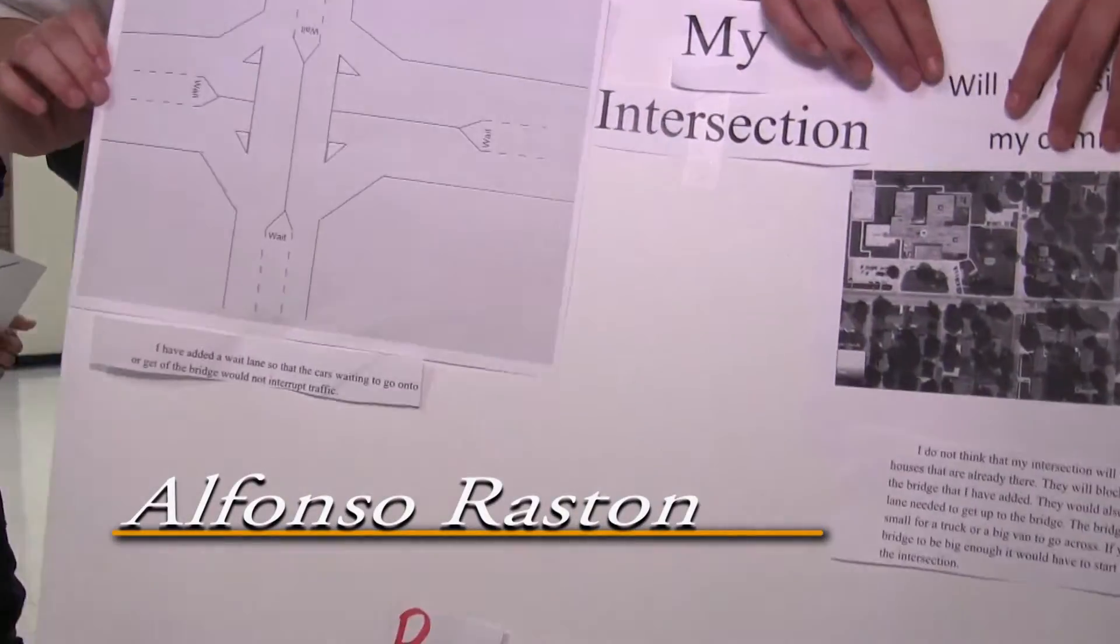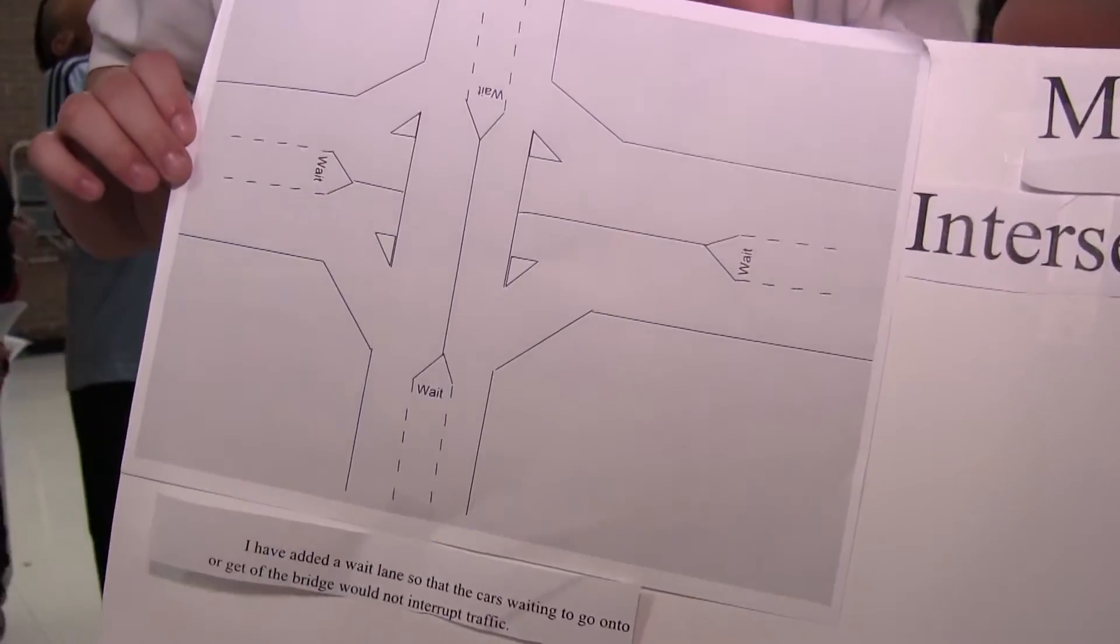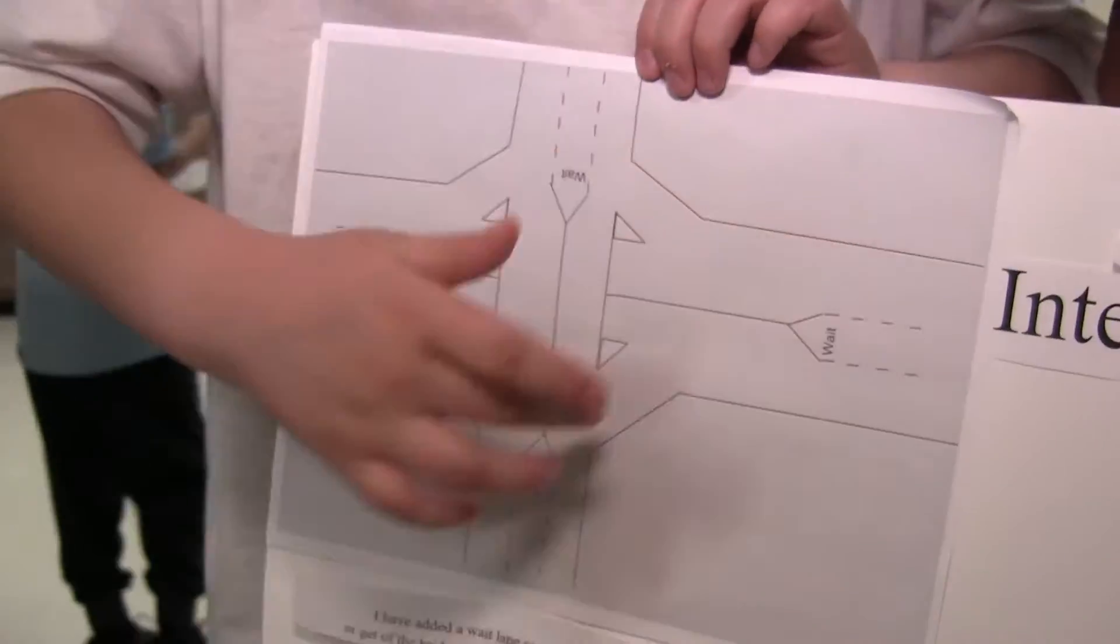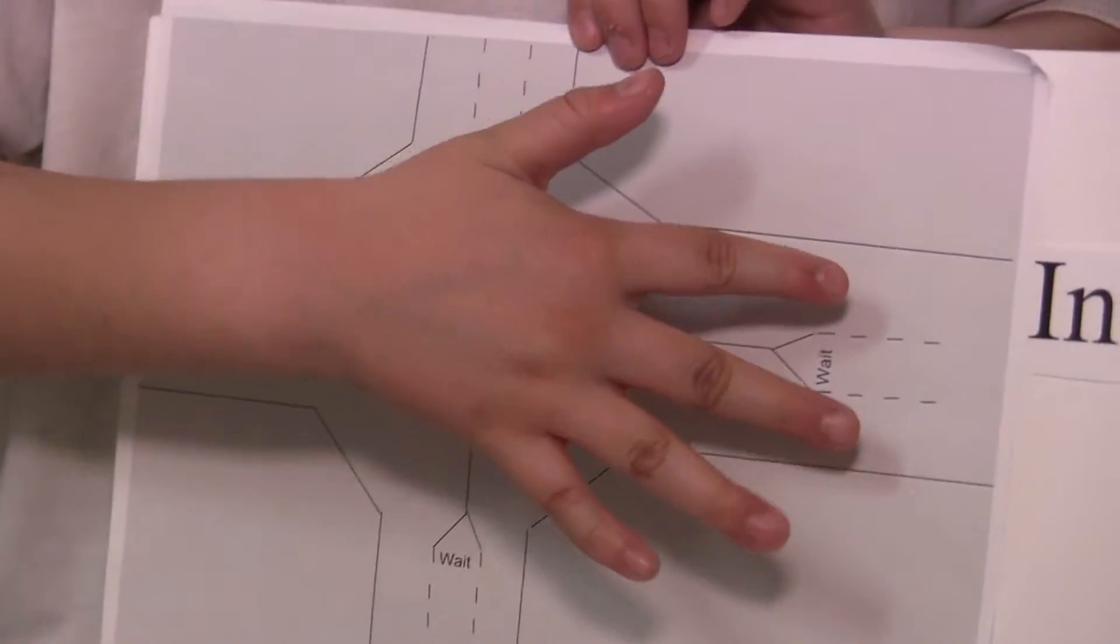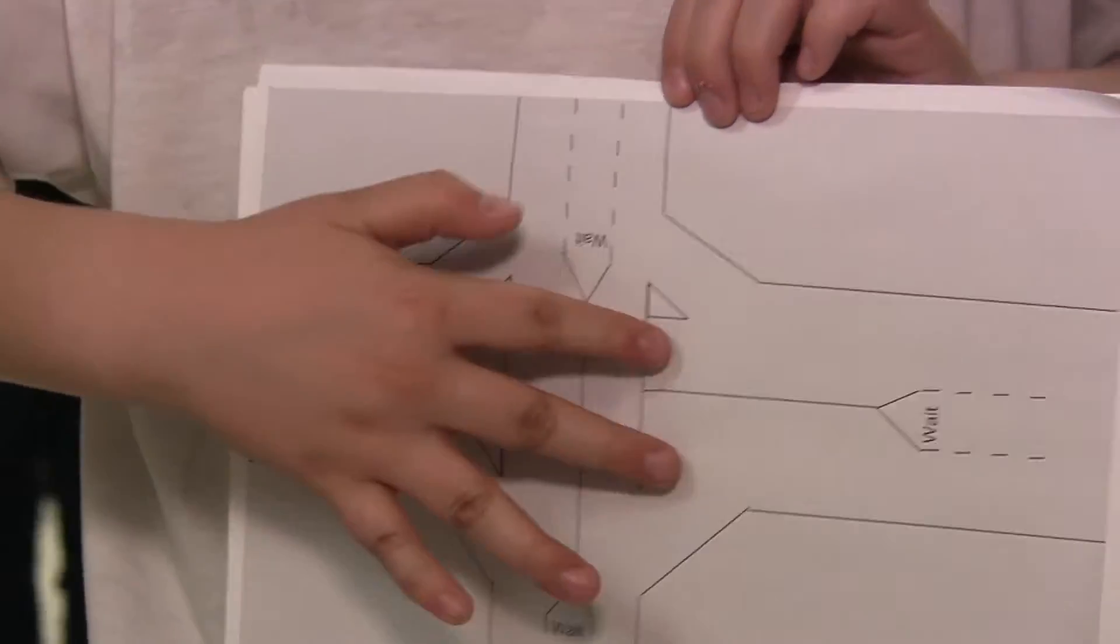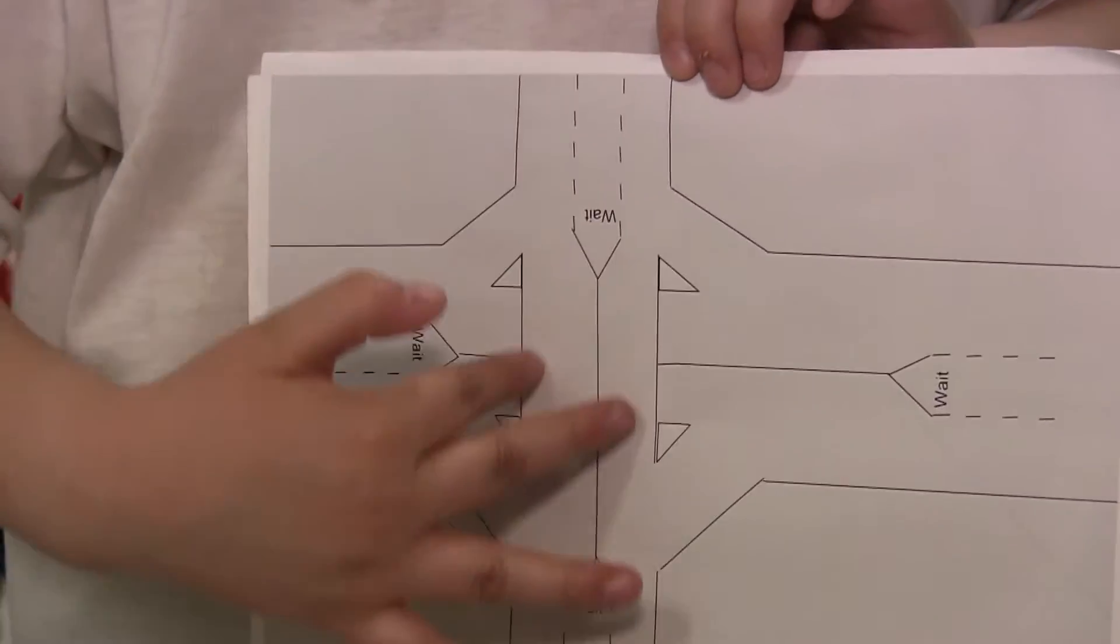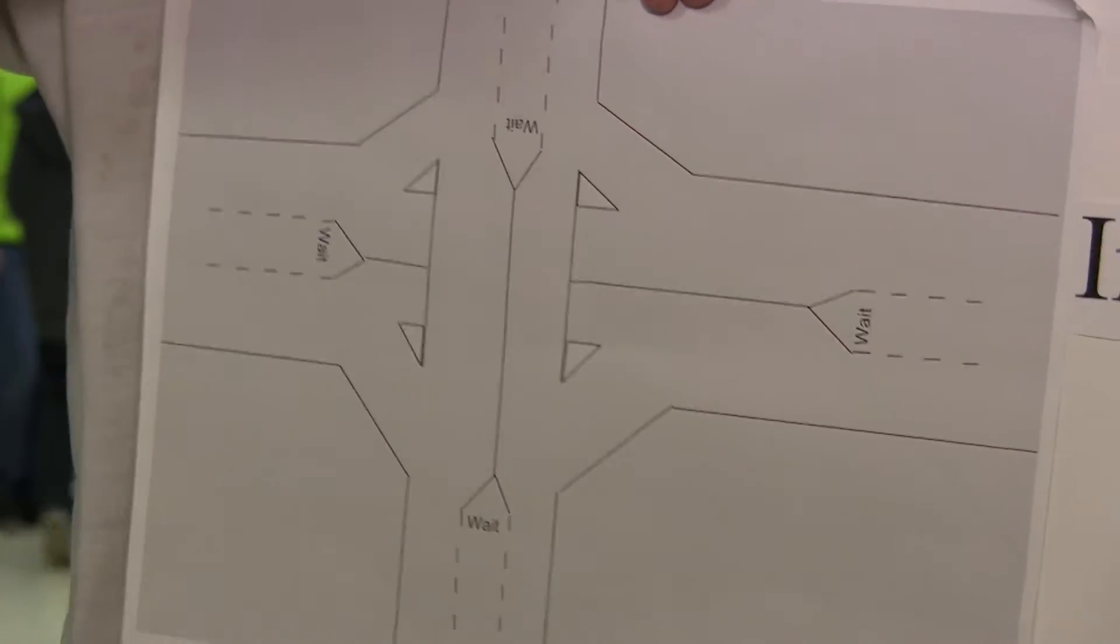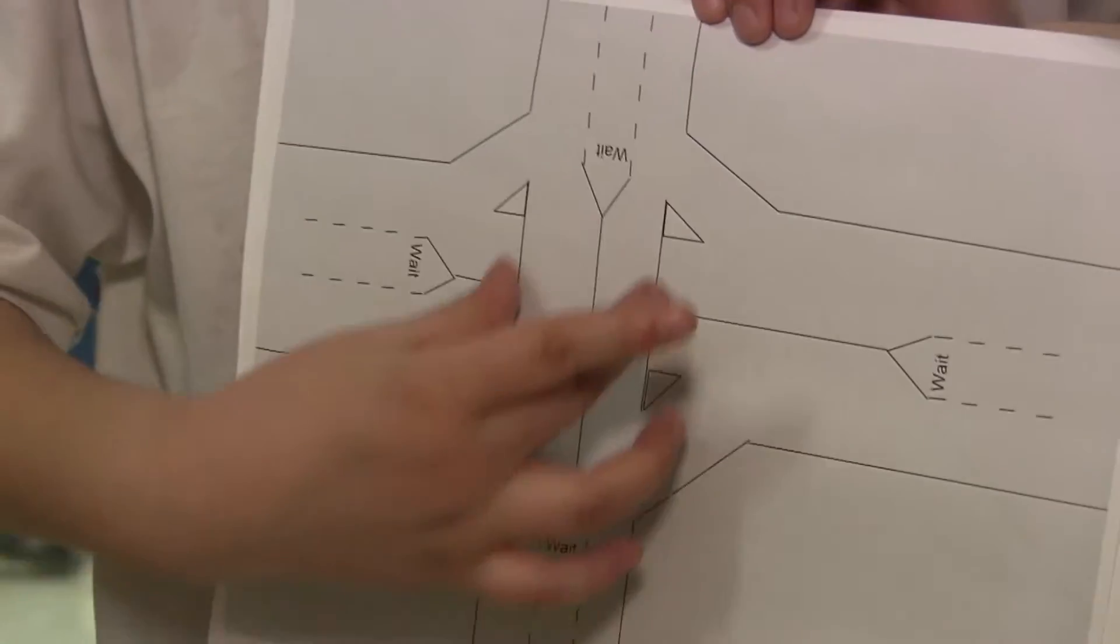There's a new way to build an intersection. As you see here, there are four waiting lanes, one for each way and two different lanes. It's pretty much like a normal intersection except for the bridge.